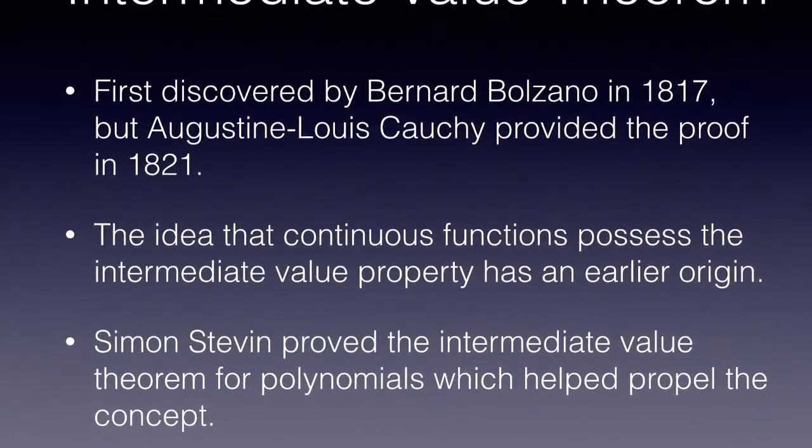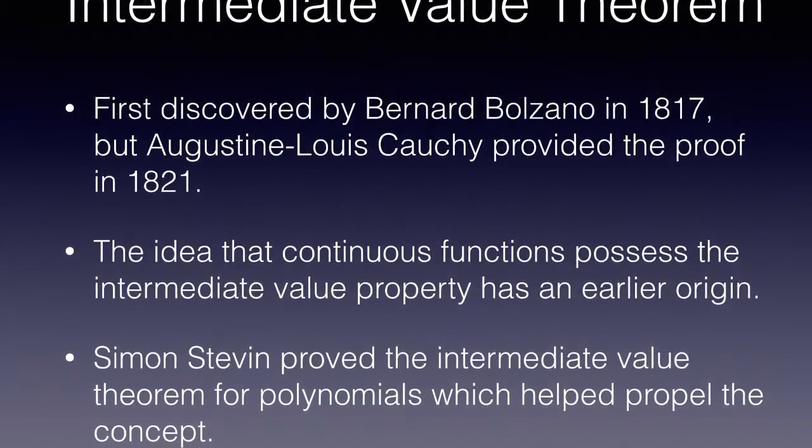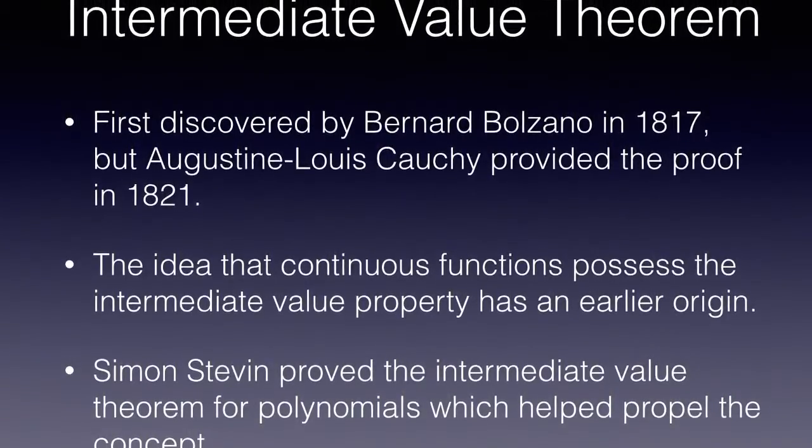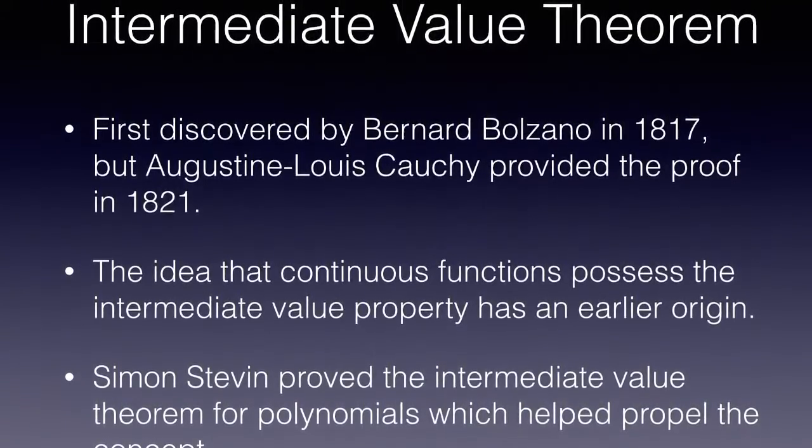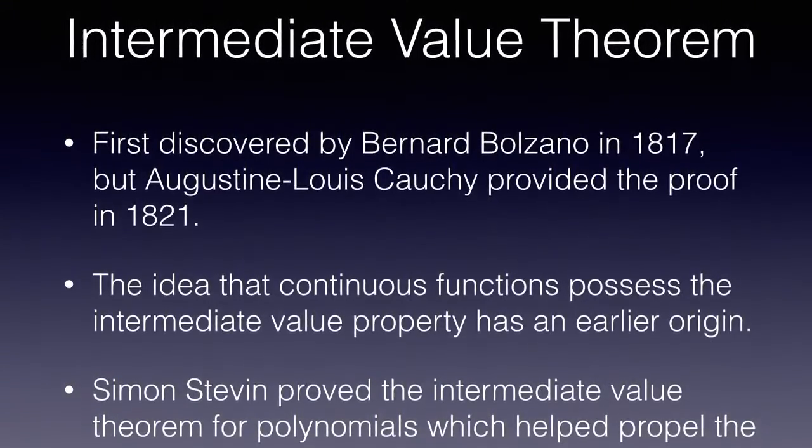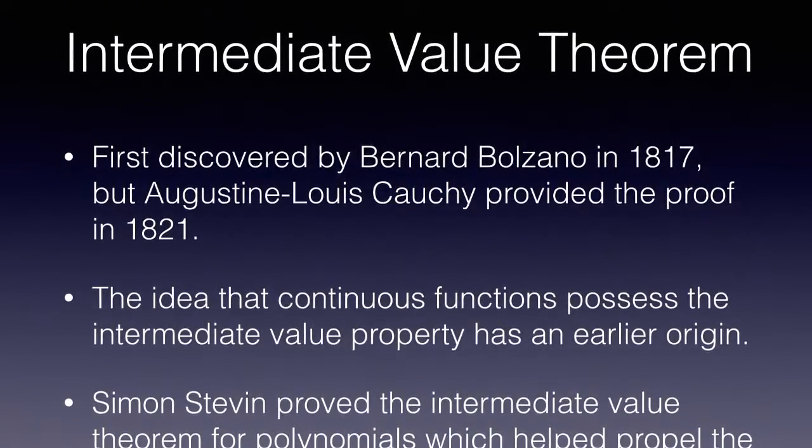Intermediate Value Theorem: First discovered by Bernard Bolzano in 1817, but Augustin Louis Cauchy provided the proof in 1821. The idea that continuous functions possess the intermediate value property has an earlier origin. Simon Stevin proved the Intermediate Value Theorem for polynomials which helped propel the concept.